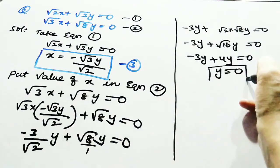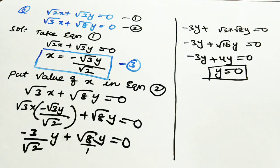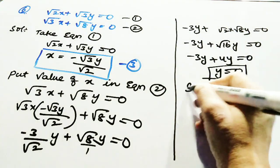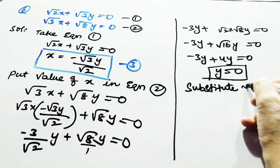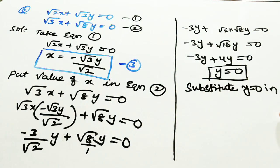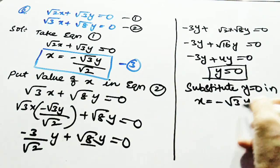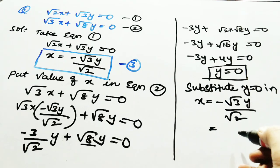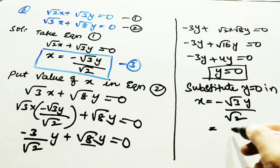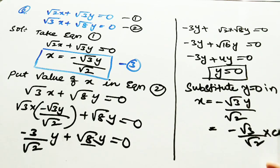Since y equal to 0, substitute y equal to 0 into equation 3. Equation 3 is x equal to minus root 3 times y divided by root 2. With y equal to 0: x equal to minus root 3 divided by root 2 times 0, which equals 0. Therefore x equal to 0 and y equal to 0. The solution is x equal to 0, y equal to 0.